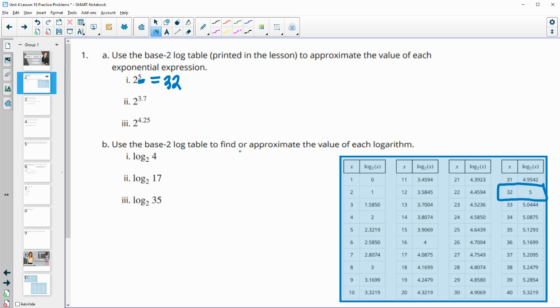So then we'll look for 3.7 in the output, and we find that here. So two to the 3.7 would give us 13. Look for 4.25 in the output table. So right here, two to the 4.25 would be 19.